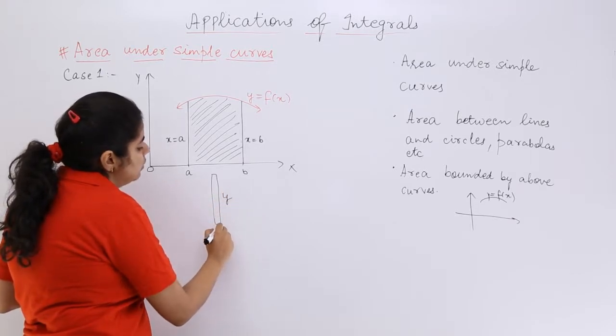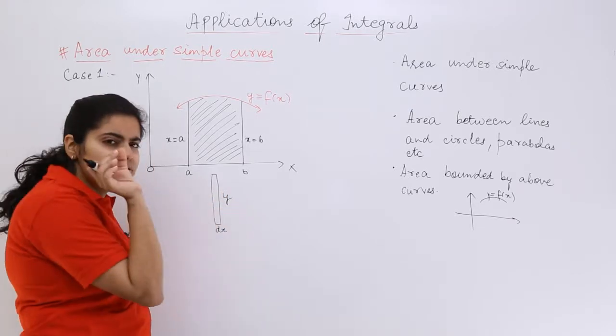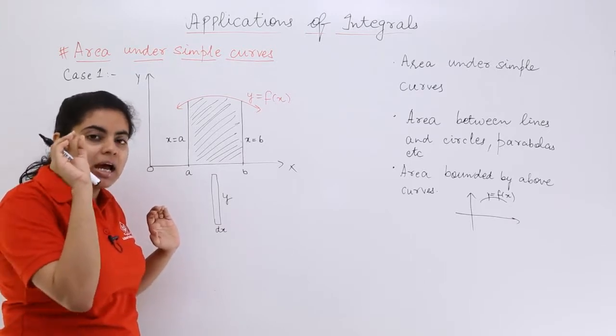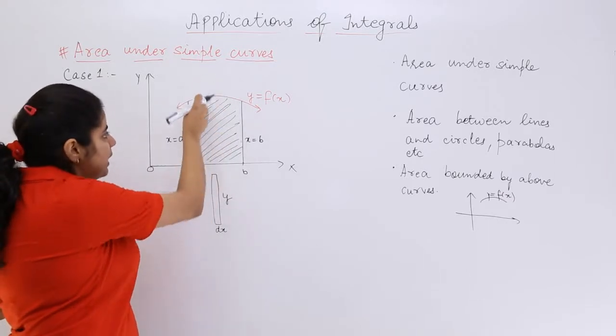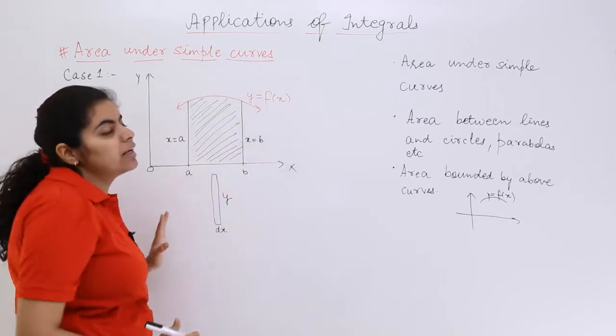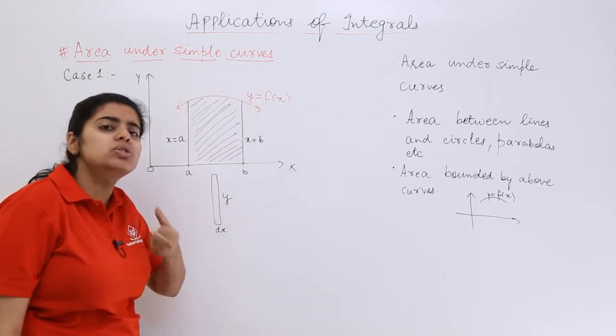If that strip is placed and this region can be considered as the collection of so many infinite strips, then what would be the area?